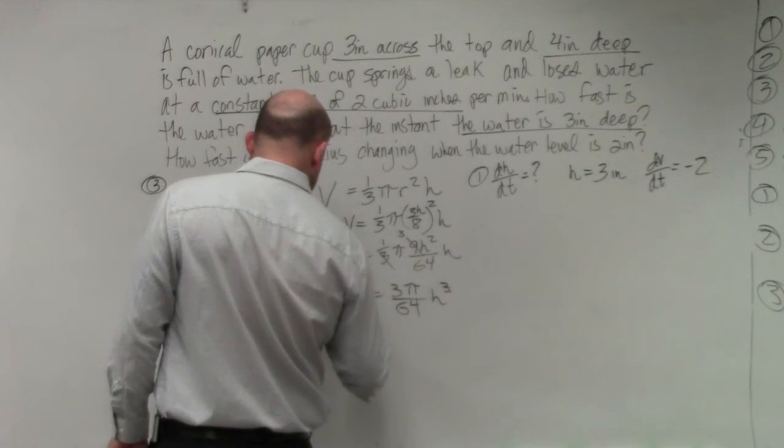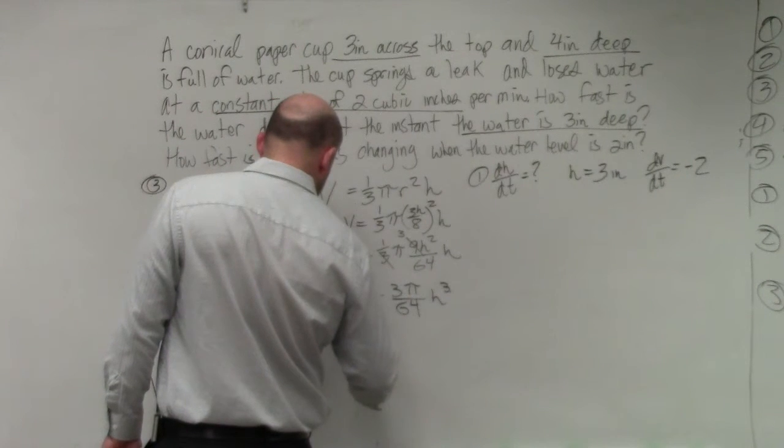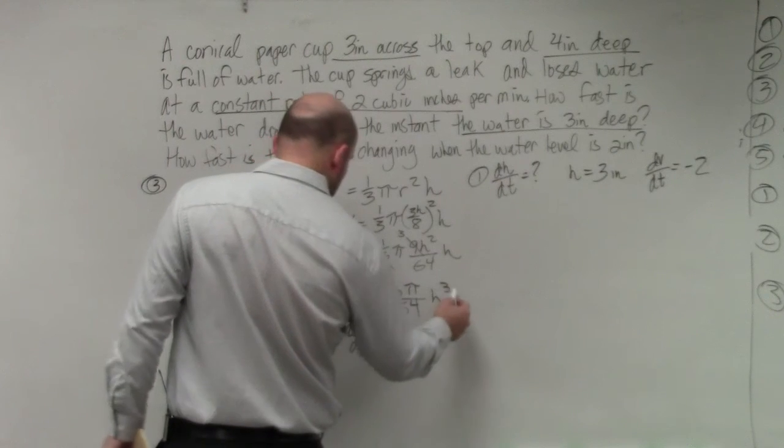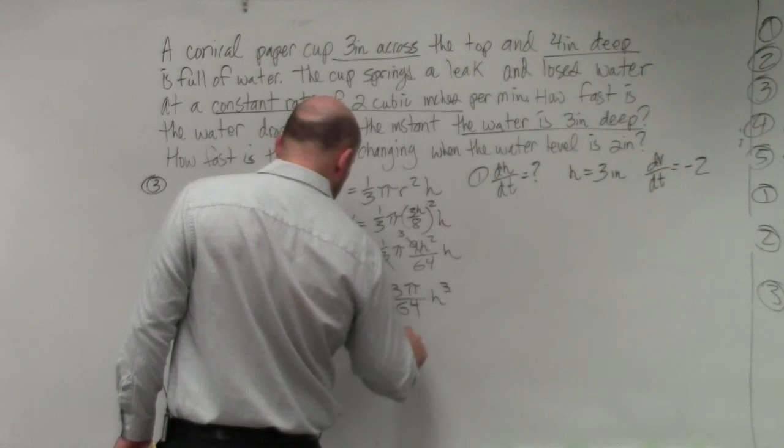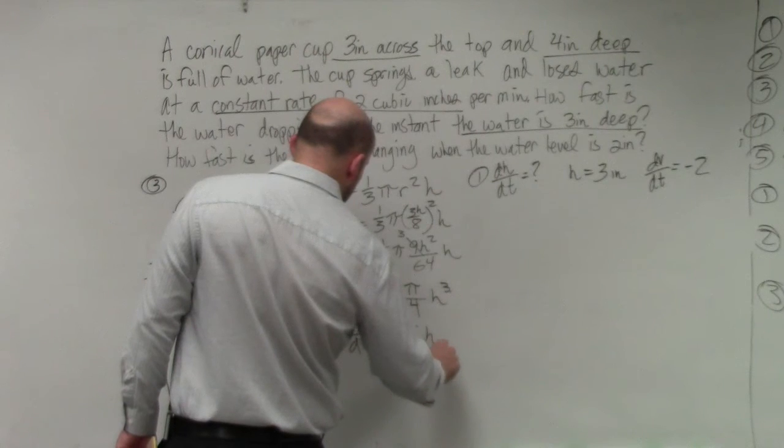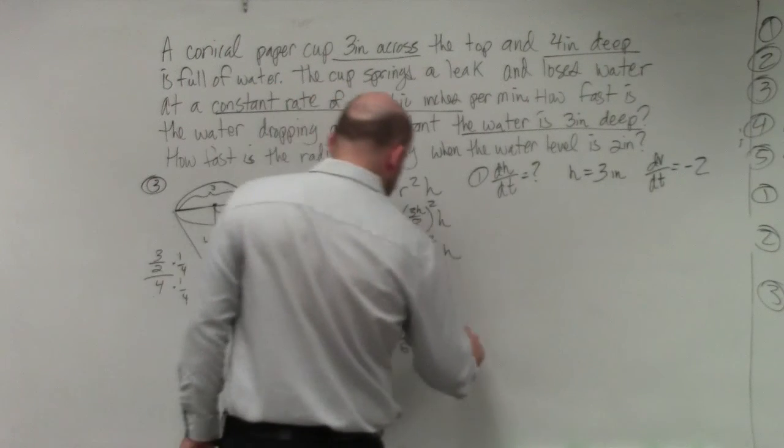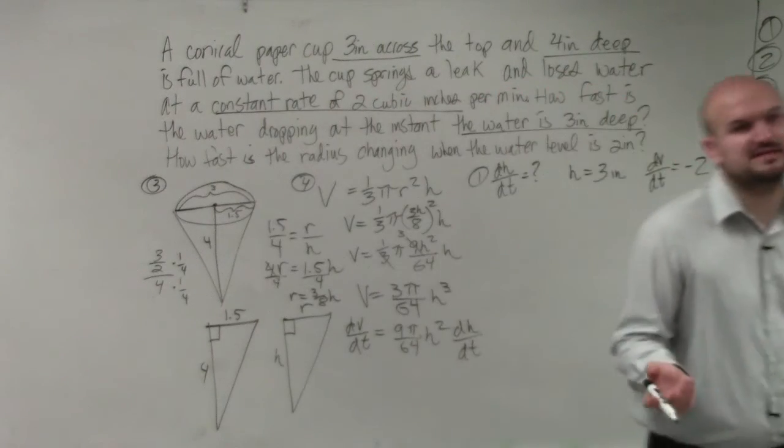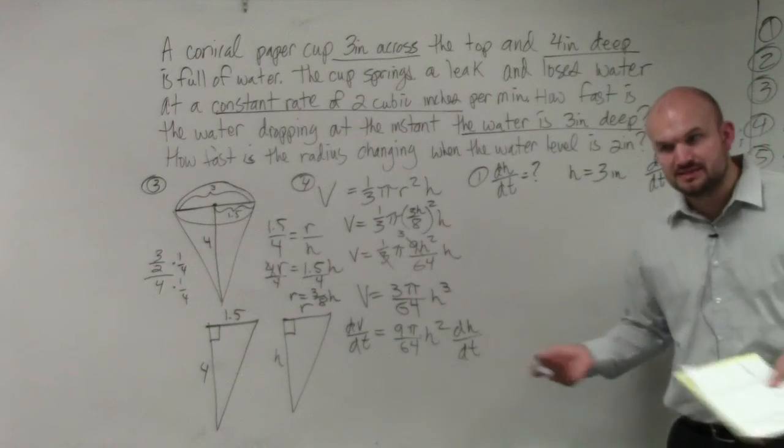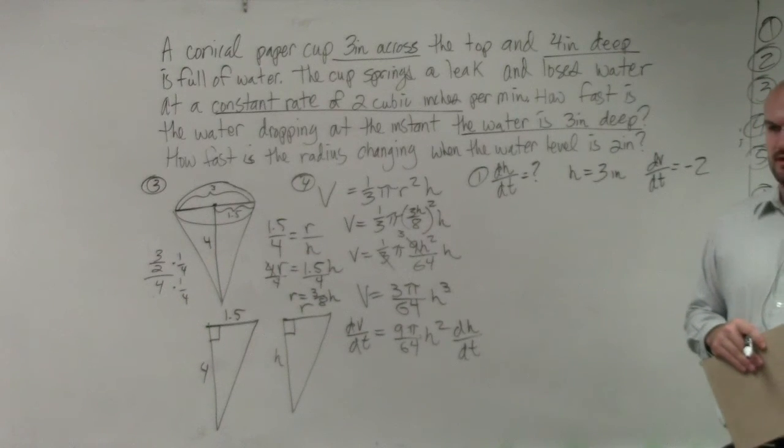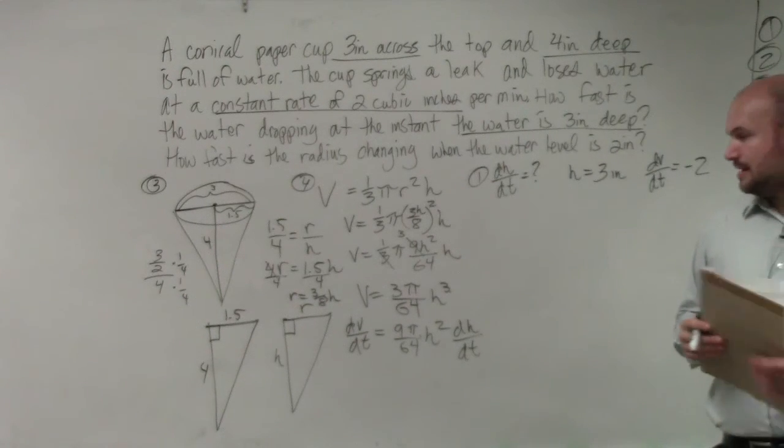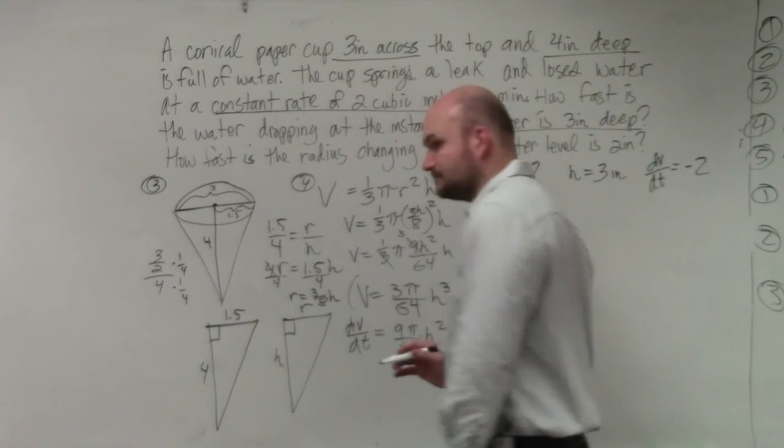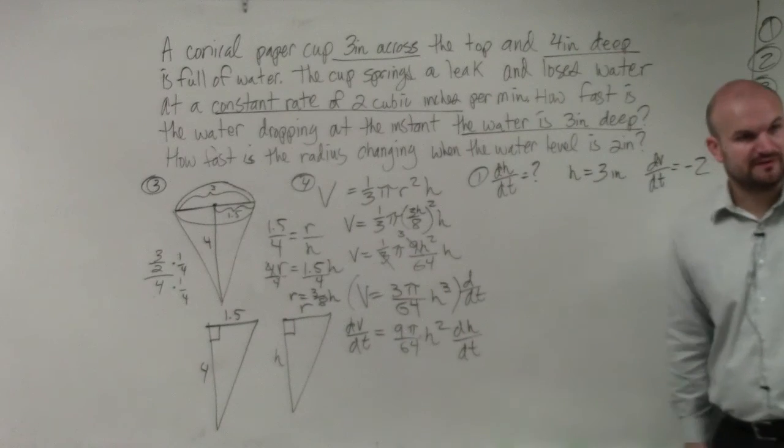So, if I differentiate with respect to time, I get dv/dt equals, bring the 3 down to multiply it, I get 9π over 64 h² dh/dt. Right? Because if I take d/dt of both sides. Does everybody follow me on the next step? I basically just differentiated d/dt. So, now we're taking the derivative with respect to time.